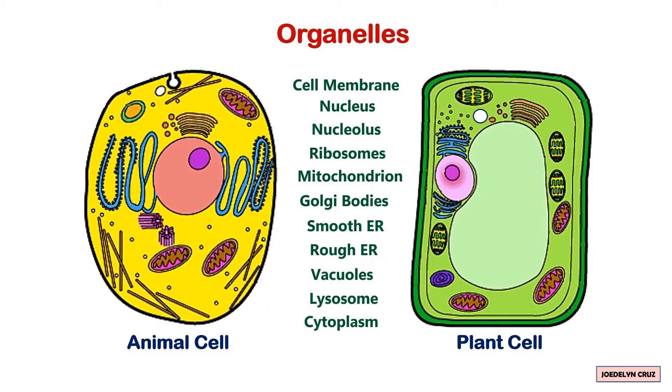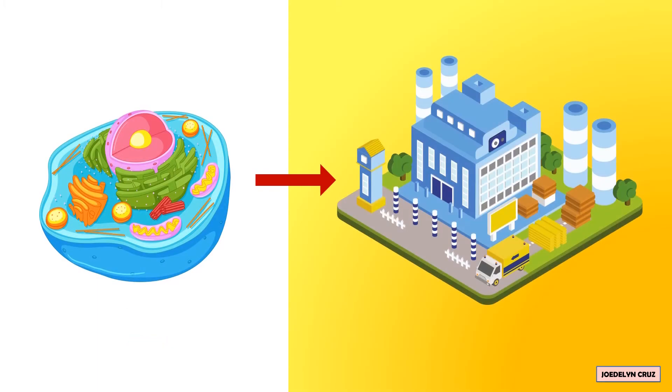To understand the functions of those organelles, you can imagine a cell as a factory with different departments, each performing a specialized task.